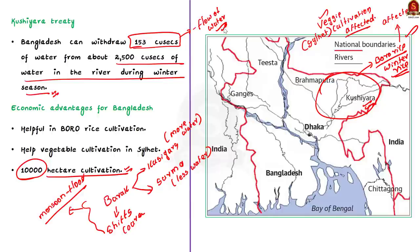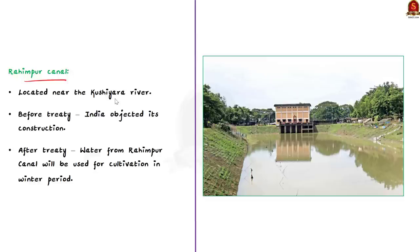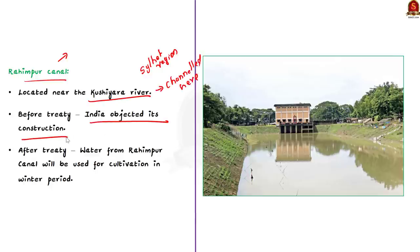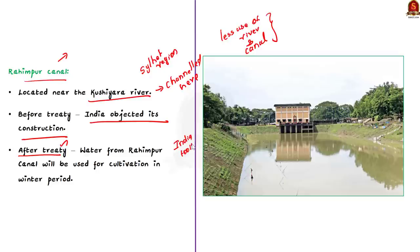This article also talks about the Rahimpur Canal, located in the eastern part of Bangladesh in Sylhet. The water of the Kushiyara River will be channeled through this canal, which was built to help Bangladeshi farmers access the river's water. India had objected to the construction activity in the canal, reducing its utility. Due to India's objection, the utility of both the river and the Rahimpur Canal during winter went down, affecting boro rice and vegetable cultivation in Sylhet. But now, as the Kushiyara River Sharing Agreement is finalized, India has withdrawn its objection.